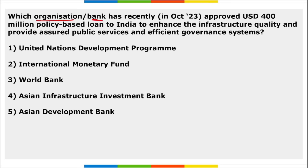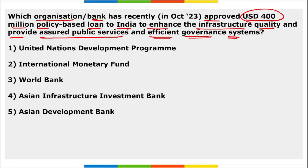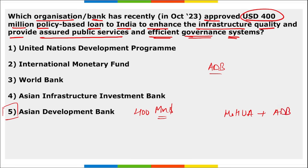Which organization recently approved a $400 million policy-based loan to India to enhance infrastructure quality and provide public services and efficient governance? It is the Asian Development Bank. They approved a $400 million policy-based loan to India, to be implemented by the Ministry of Housing and Urban Affairs.